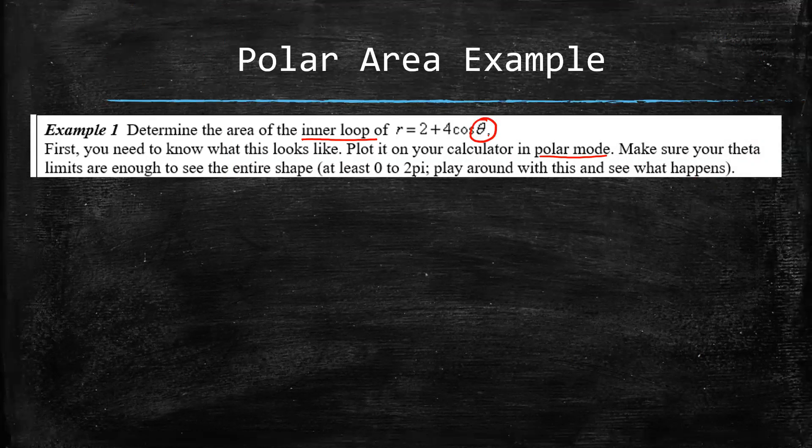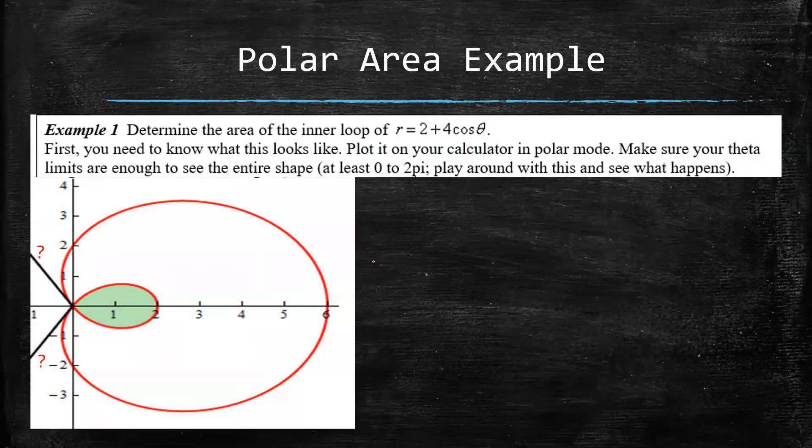You can think about the period of this graph. So cosine theta obviously has a period of 2 pi. But definitely play around with it and see how it looks differently if you maybe go 0 to pi versus 0 to 4 pi and so on.